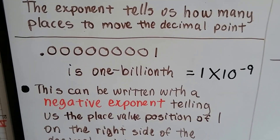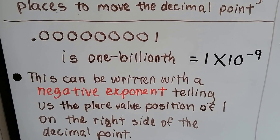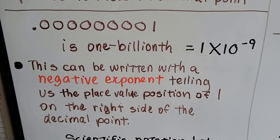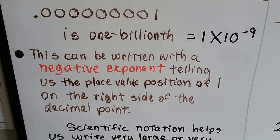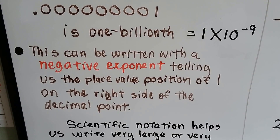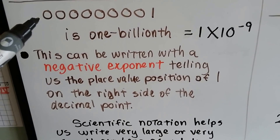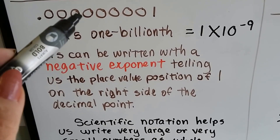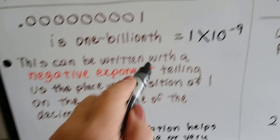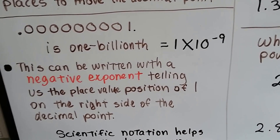When we see something like this, a decimal that's really long, this is one billionth, and it can be written as 1 times 10 to the negative ninth power. It can be written as a negative exponent, telling us the place value position of 1 on the right side of the decimal point. The negative 9 tells us to go 9 places, so our decimal point would be back there — 1 times 10 to the negative ninth power.